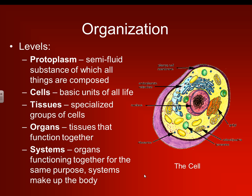So the organization levels of our cells: first we have the protoplasm, which is a semi-fluid substance of which all things are composed. Next we have our cells, the basic unit of all life. Then you have cells that make up the tissues, which are specialized groups of cells. Those cells come together to make organs — tissues that function together to form an organ. Then those organs come together to create systems, which are organs functioning together for the same purpose. Systems make up the body.